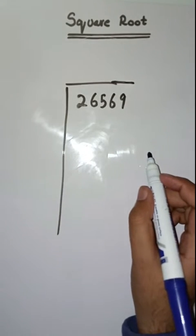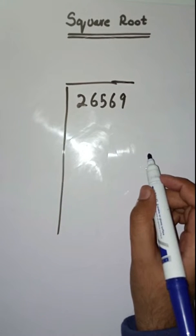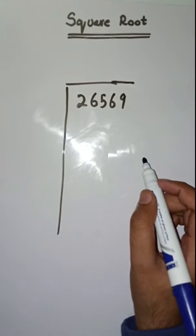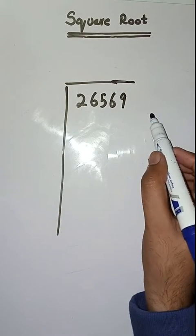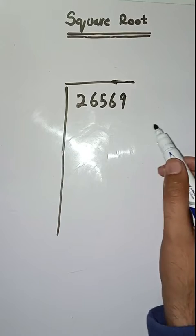Hello everyone, hope you all are fine. Welcome to my channel students. Today we will learn how to find a square root. We have to find square root of 26,569. So first step is we have to make pairs from right to left like this.